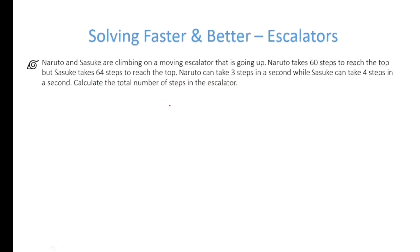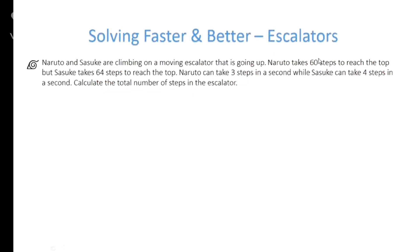Moving ahead to the next one: Naruto and Sasuke are climbing on a moving escalator going up. Naruto takes 60 steps to reach the top but Sasuke takes 64 steps. Naruto can take 3 steps per second while Sasuke can take 4 steps per second. Calculate the total number of steps.